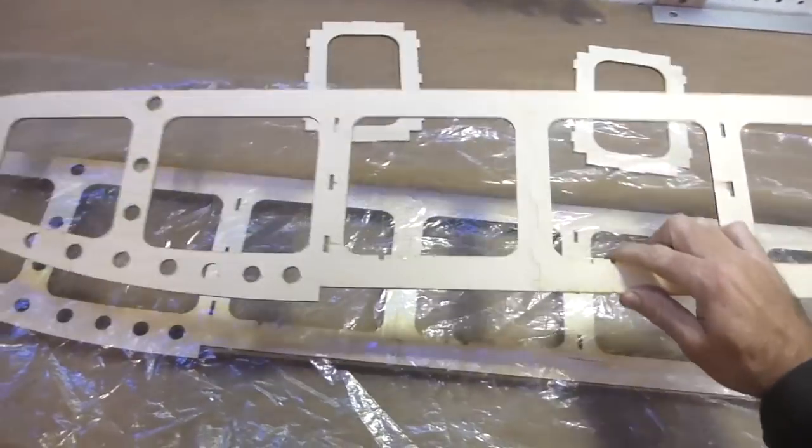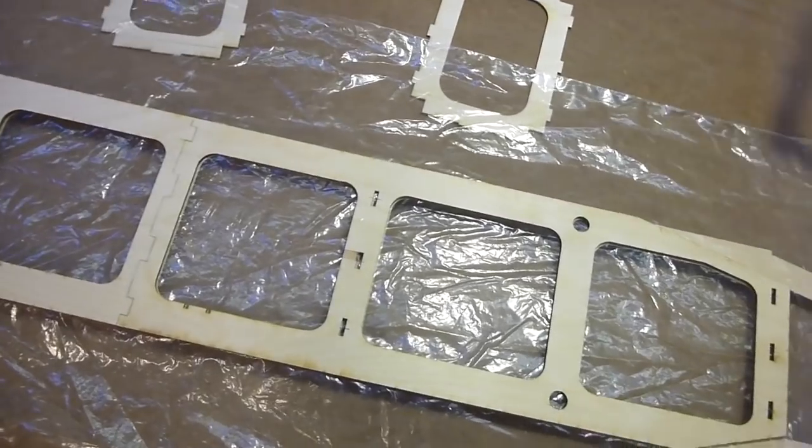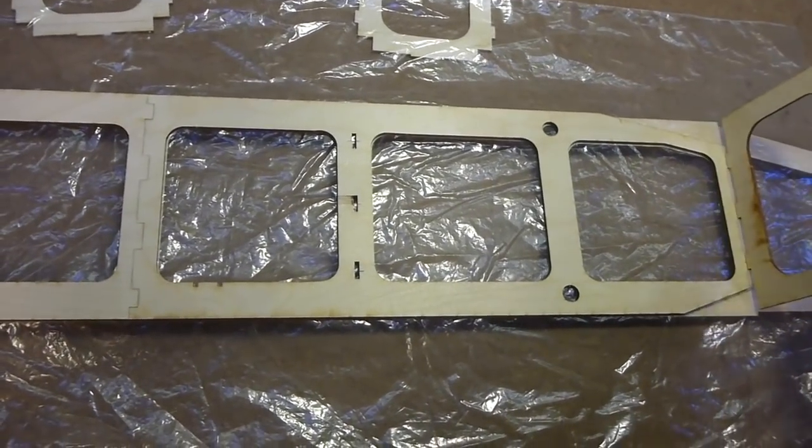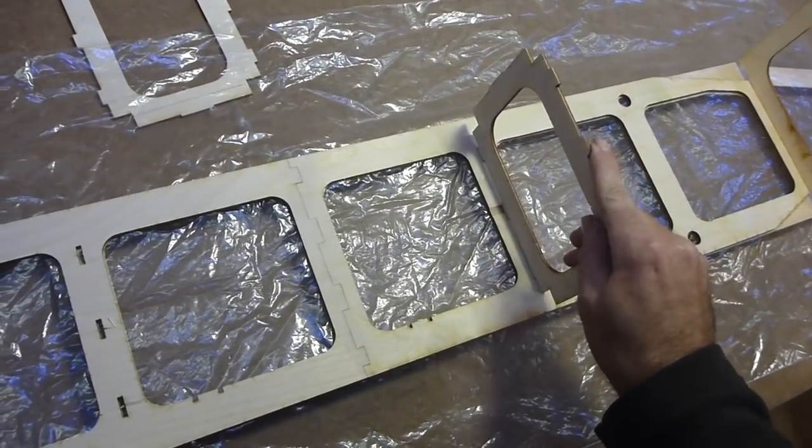And assemble the other fuselage side on top of that, as a mirror image of the first one. This is important, making sure that you build a right and left hand side of the fuselage.